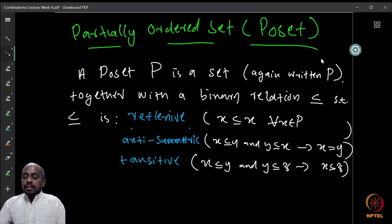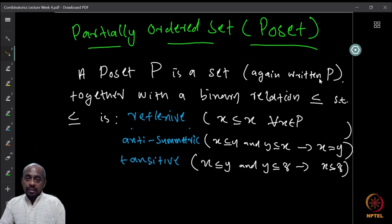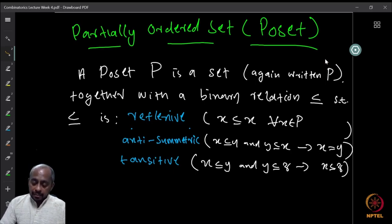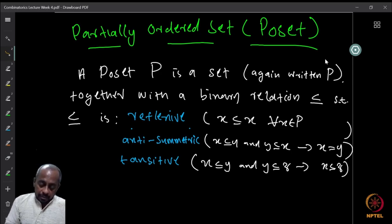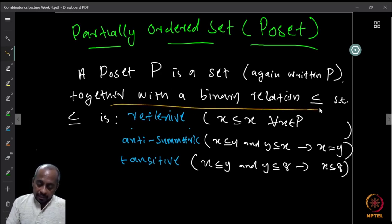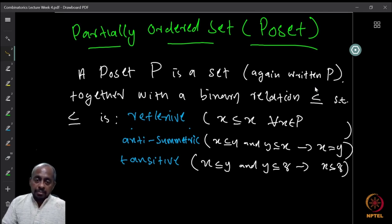So what is a partially ordered set? A partially ordered set P is a set — the set is also denoted P, which is an abuse of notation, but clear from context. So we represent both the base set and the structure with the same letter P. A poset P is a set together with a binary relation, denoted less than or equal to in most cases, though other symbols can be used.